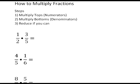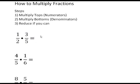This video is on how to multiply fractions. The steps are: step one, multiply the tops — the tops are called the numerators; step two, multiply the bottoms — the bottom of a fraction is called the denominator; and step three, reduce if you can. So the first example is one half times three fifths.